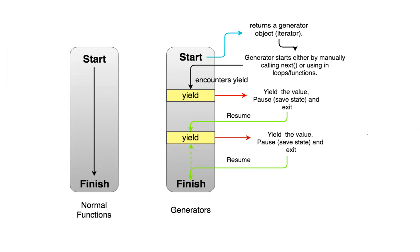Unlike normal functions, a generator is also a function but it works like an iterator. It will execute some of the lines and it will yield a value. Yield is essentially a return statement for the generator. It returns a value, stops at that point, and exits from the function, while the rest of the lines remain. We can call the function back and it will resume from the point where it stopped.